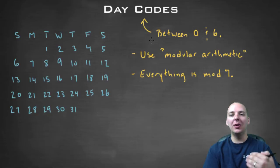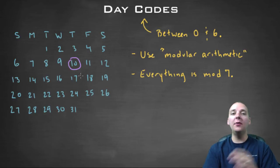The day codes though don't extend beyond six because we don't need to. Think about it, if you have a day like the tenth of a month, well whatever day of the week the tenth was on, I think you would agree that would have to be the same day of the week that the third was on.